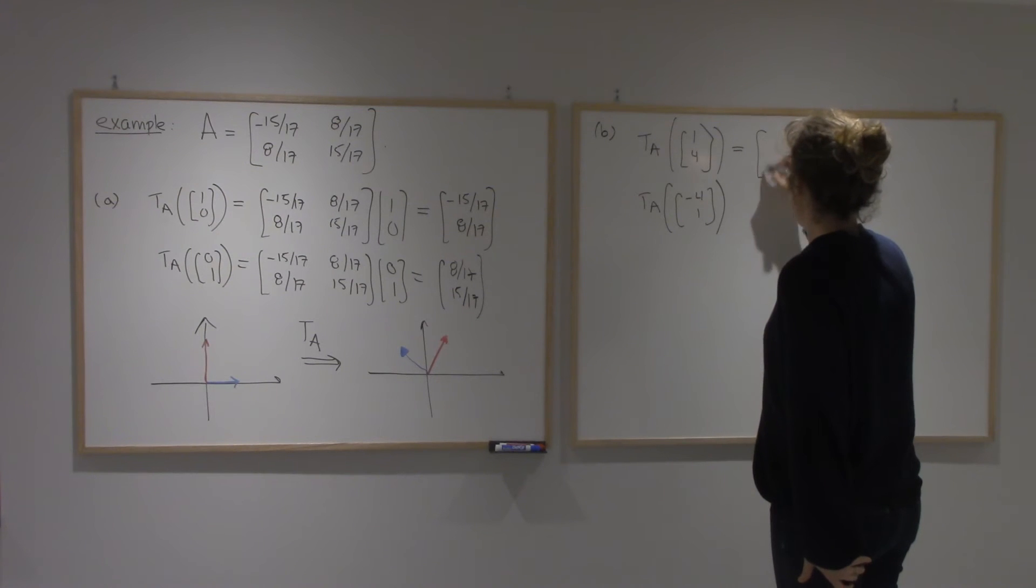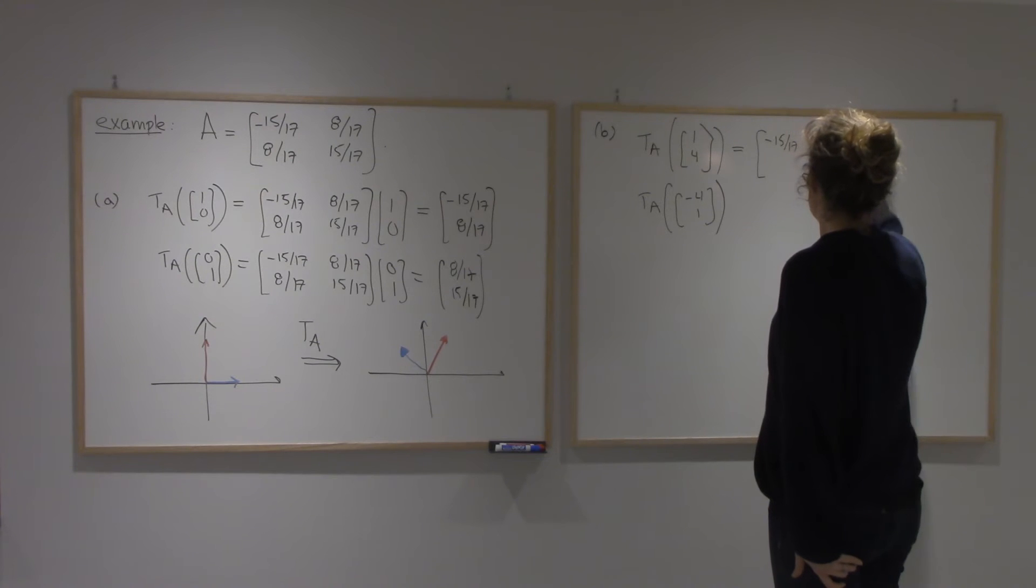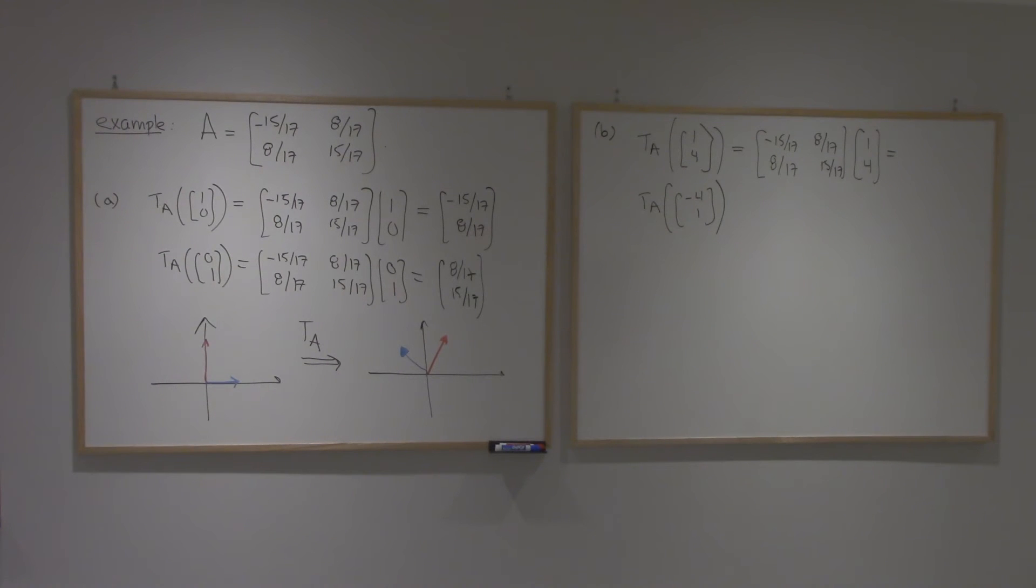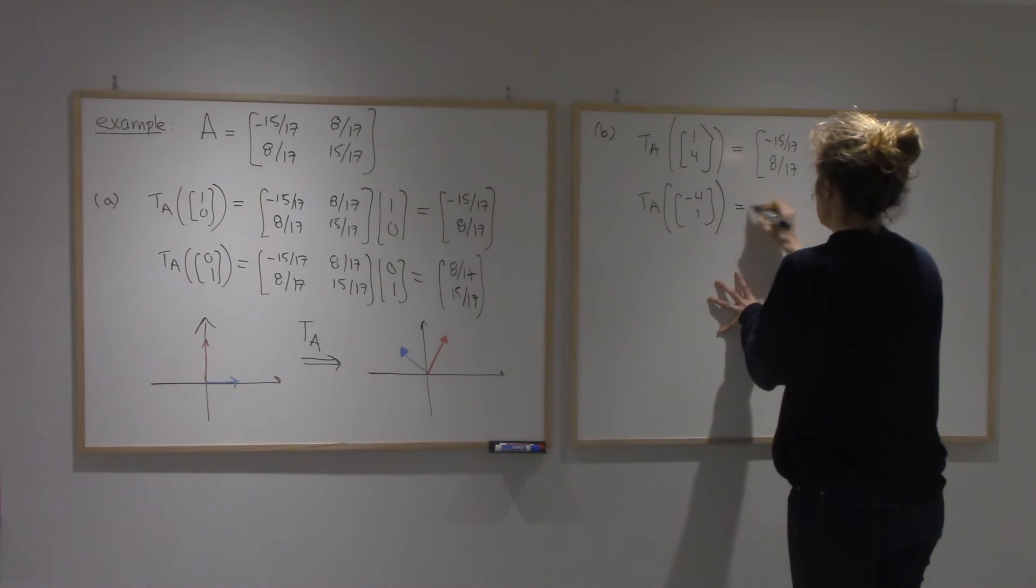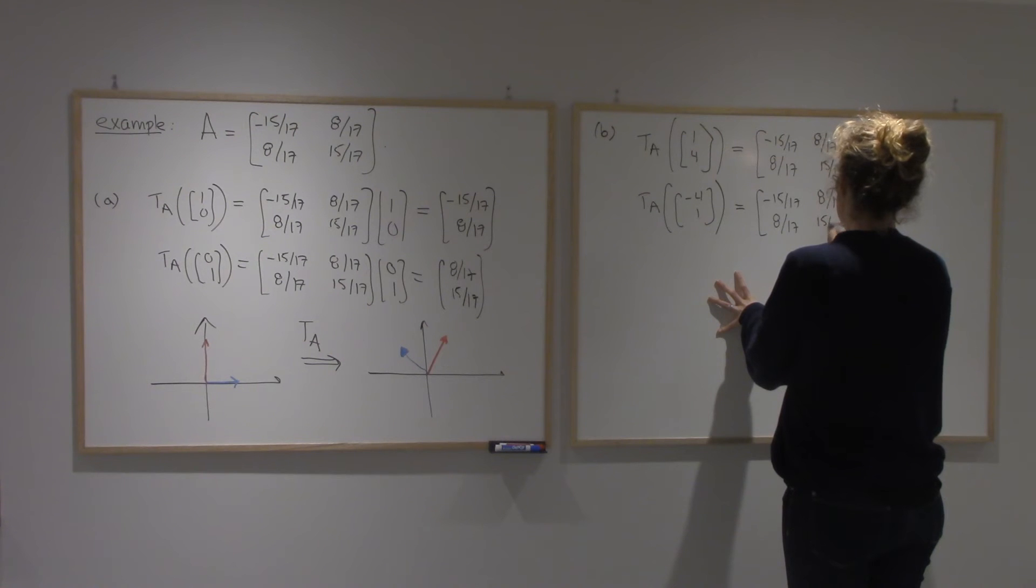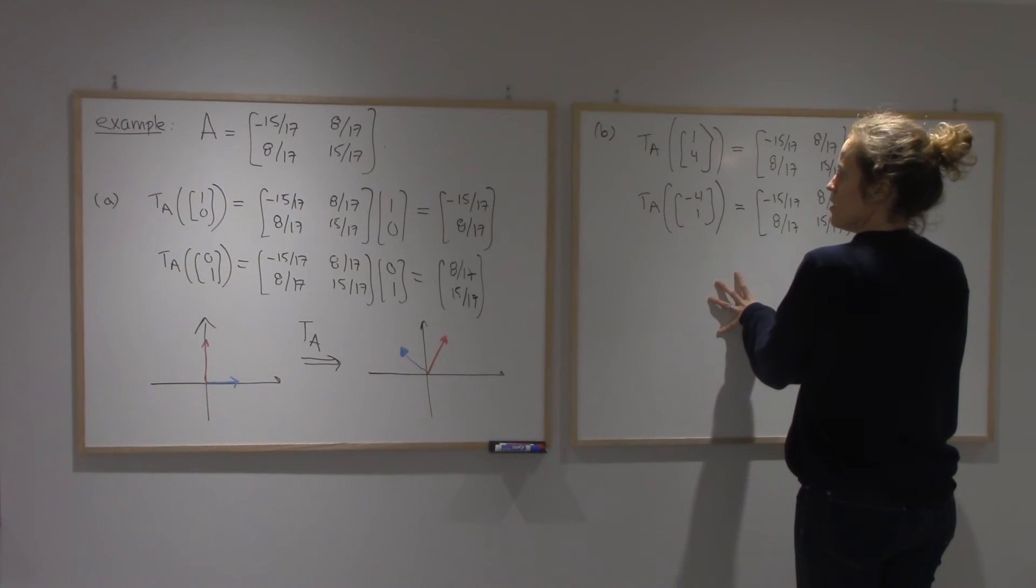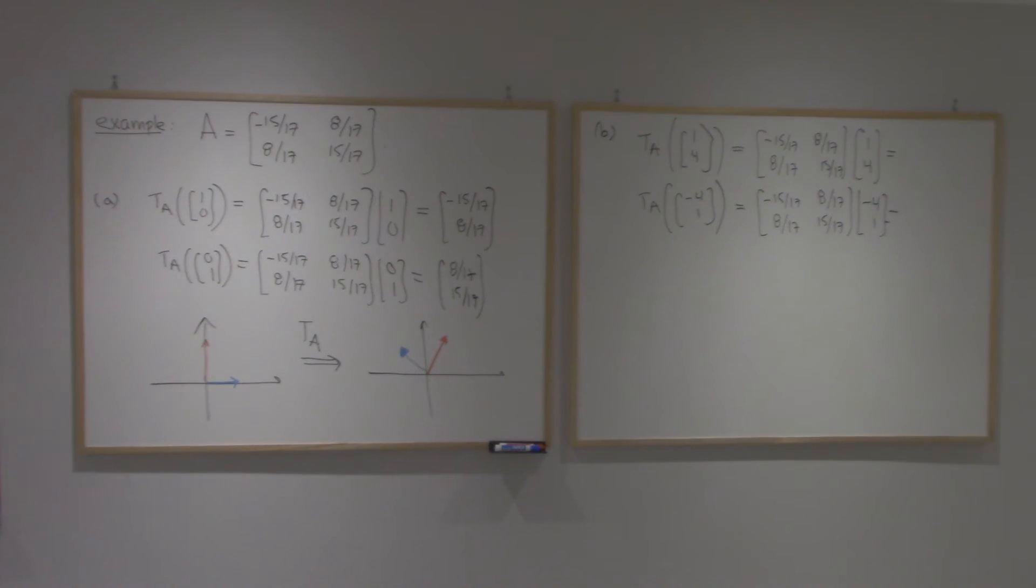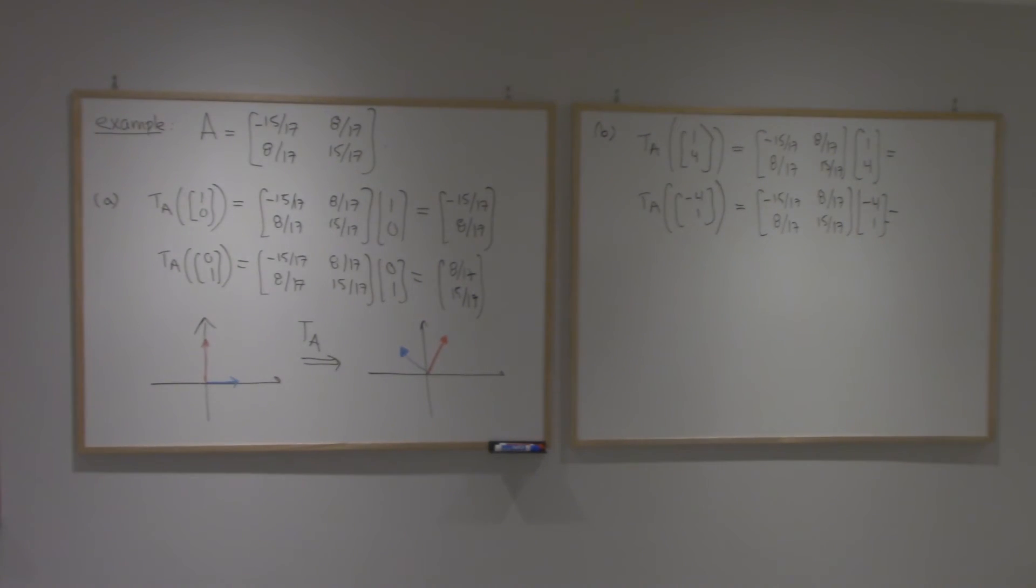If I multiply by (1, 4), and I multiply this one by (-4, 1). Alright, so I'm going to give you a chance to compute them yourself while I stare at it a bit blankly.